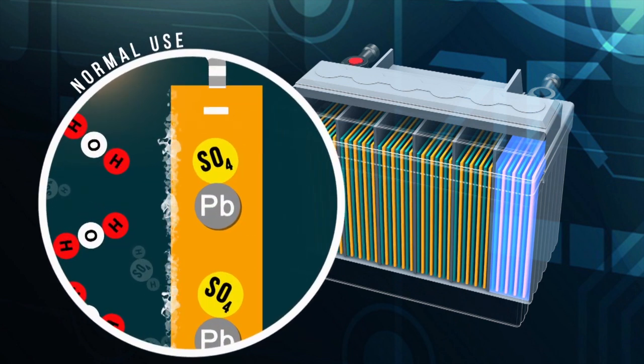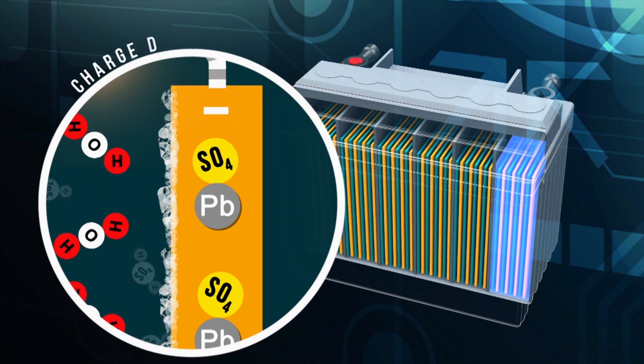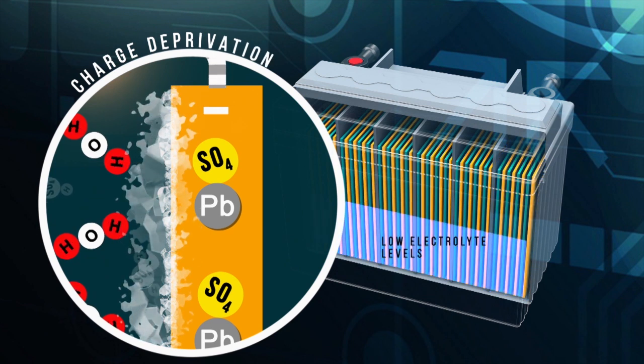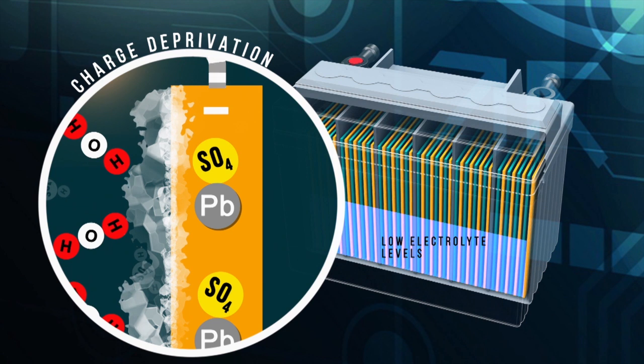During normal use of a lead flooded battery, small sulfate crystals form but these are normal and not harmful. However, during prolonged charge deprivation and low electrolyte levels, the lead sulfate converts to a stable crystalline and deposits on the negative plates.